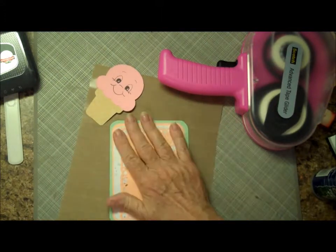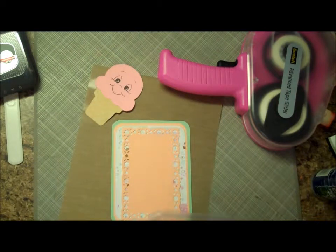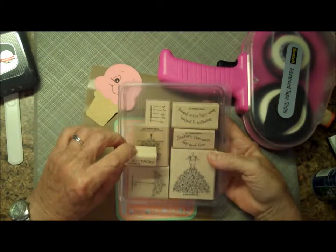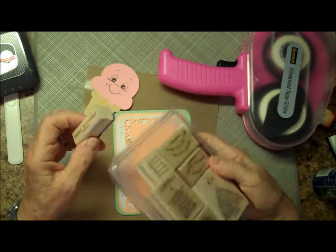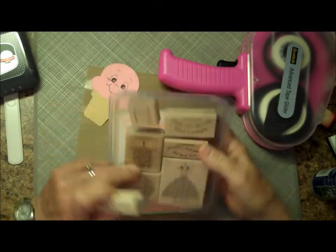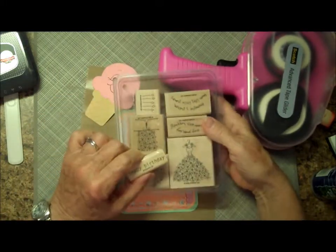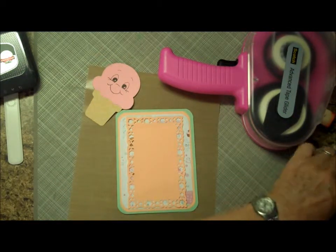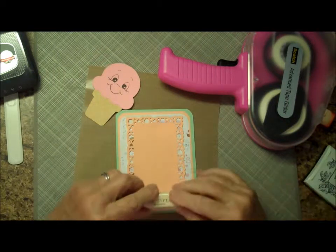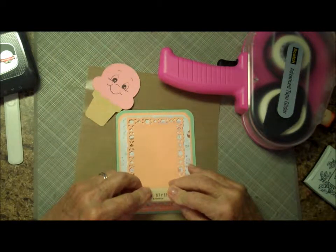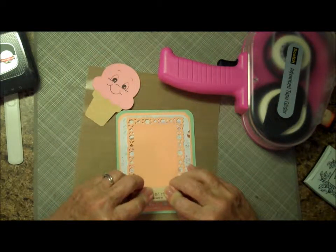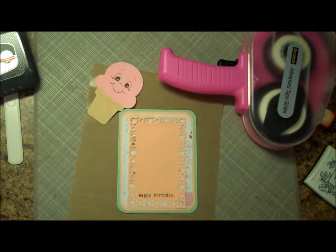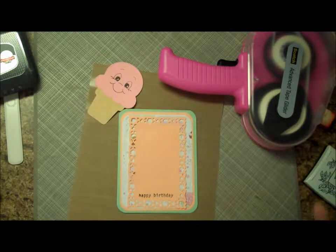Now before I put the ice cream on I'm going to stamp a happy birthday. The happy birthday is from a Stampin' Up set from 2006 called Blooming with Happiness. It's got some really cute stamps in here. But this is just a small happy birthday that fits nicely at the bottom of this mat. One more step to do.